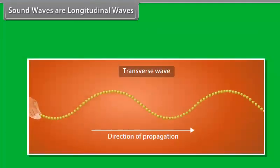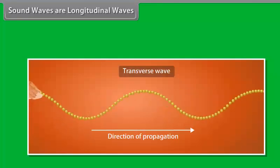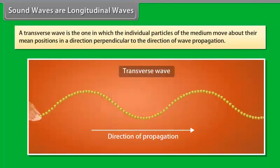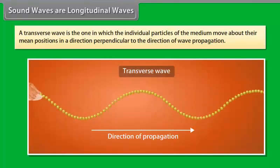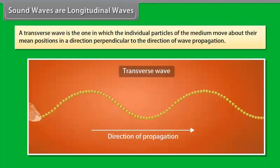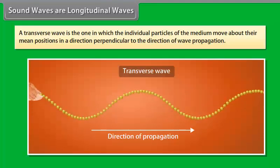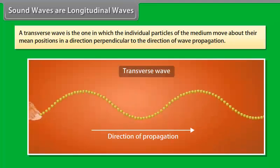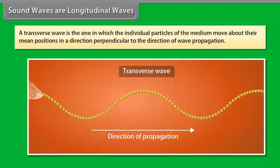There is also another type of wave called a transverse wave. A transverse wave is the one in which the individual particles of the medium move about their mean positions in a direction perpendicular to the direction of wave propagation.